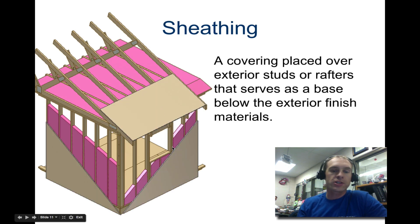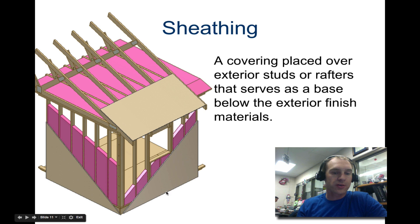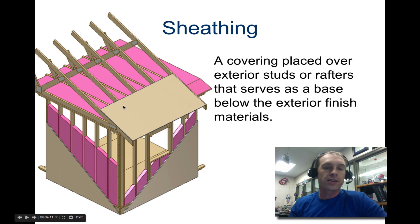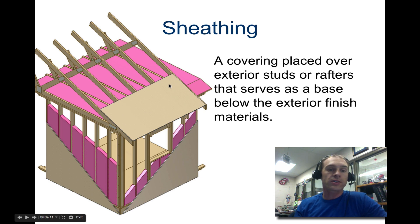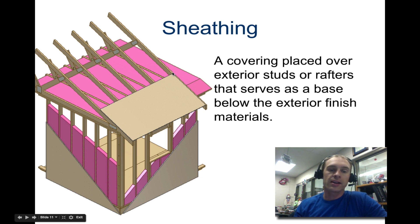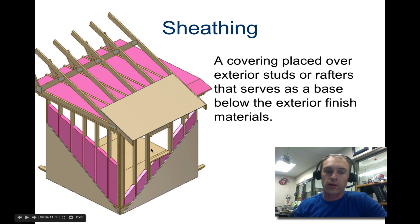Next you have sheathing. Sheathing goes on the outside of the insulation directly on the exterior, and you also sheathe on top of the trusses. These are also typically four-by-eight foot sheets, of a different thickness, and it's all based on local codes.